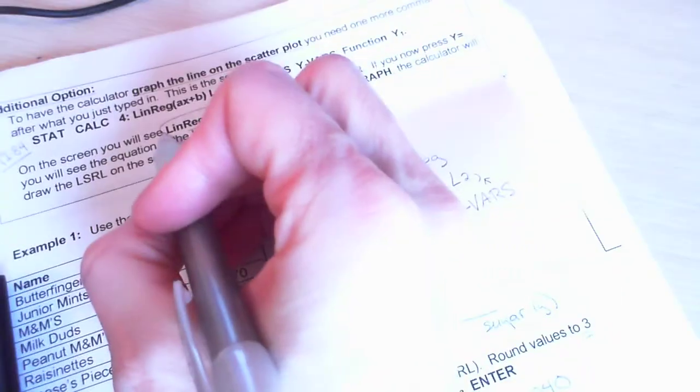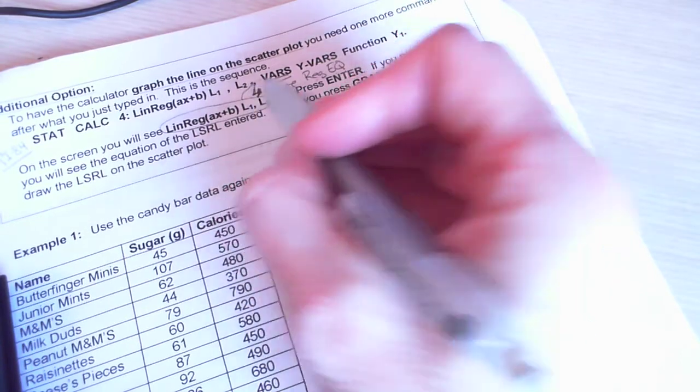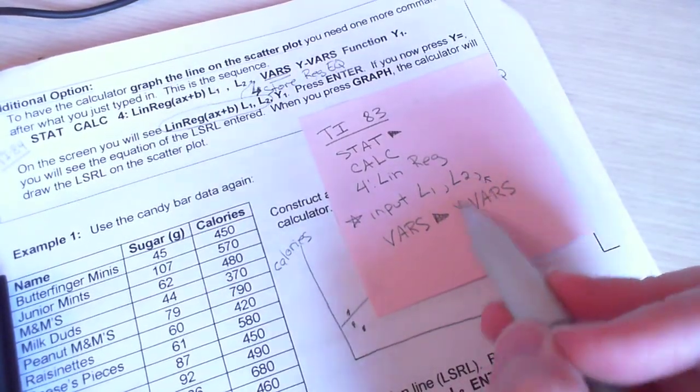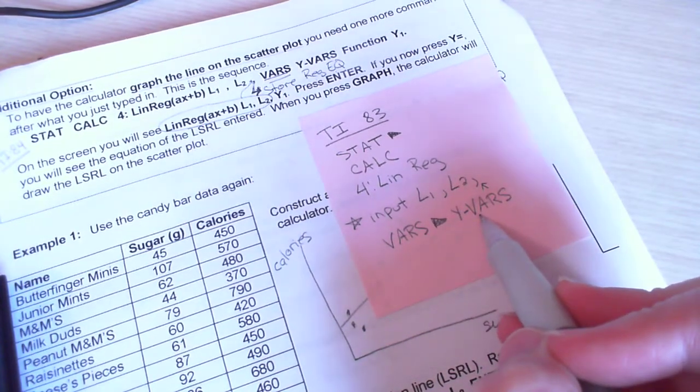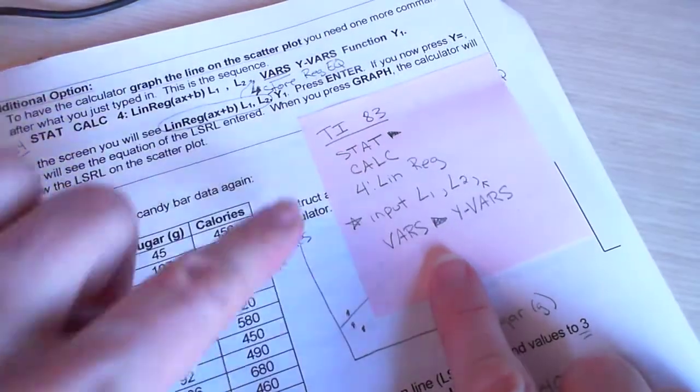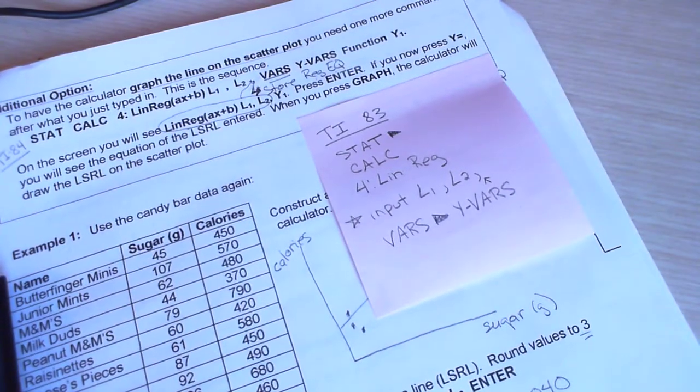So this step here actually goes in right here before the vars. So this is what it looks like: input L1, comma, L2, comma. Then you're going to hit vars. Then you're going to go over to Y vars. Then you're going to hit enter. So try that on the TI-83. It might be helpful to copy these on your notes.